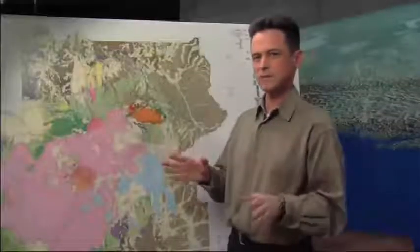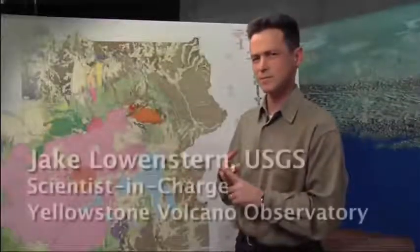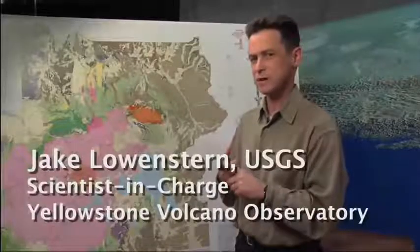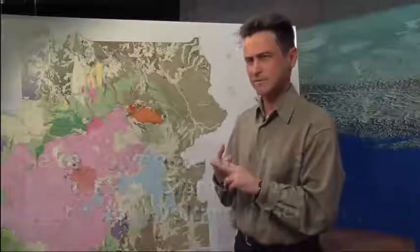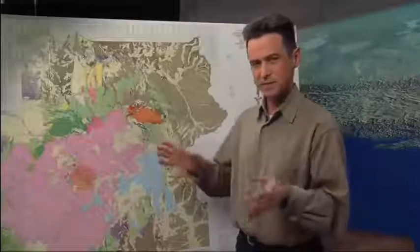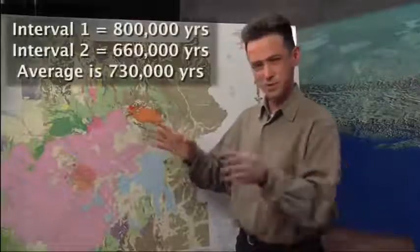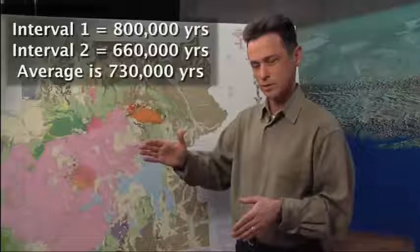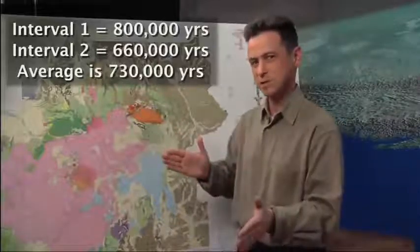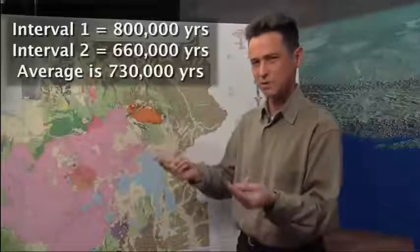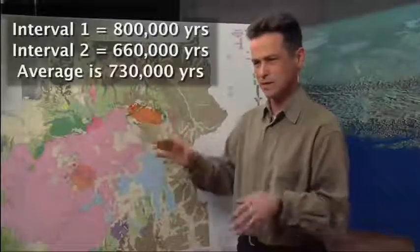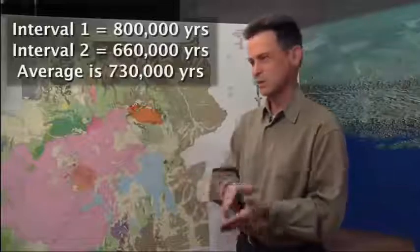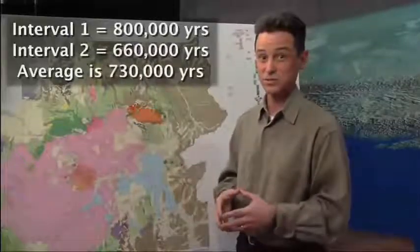Well, when you see people claiming it's overdue, usually the numbers they come up with, they say that the last eruption was 640,000 years ago, but that it erupts every 600,000 years. And so therefore, it's 40,000 years overdue. But in fact, if you average the eruption intervals, there's 2.1 million to 1.3 million and then there was another eruption 640,000 years ago. And you average those numbers, you come up with something that's over 700,000 years. And so in reality, even if you tried to make this argument, it wouldn't be overdue for another 70,000 years or so.